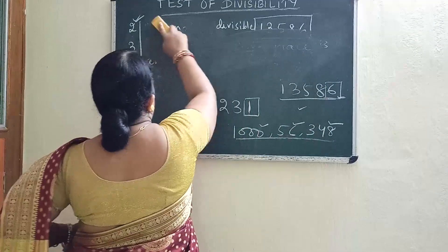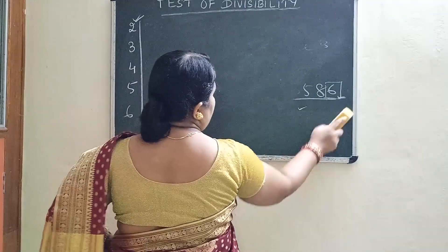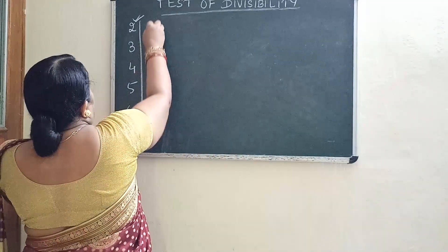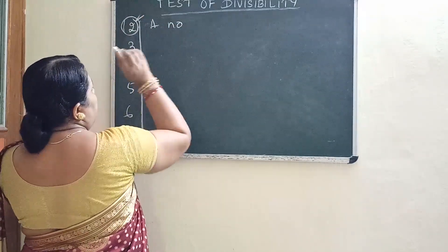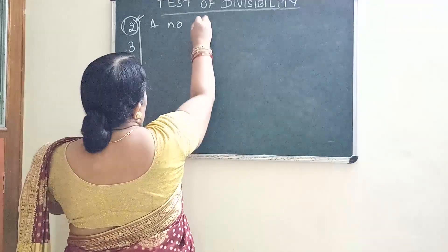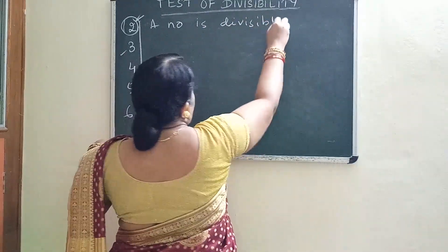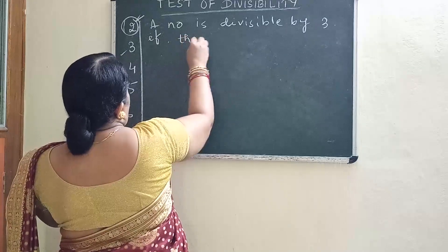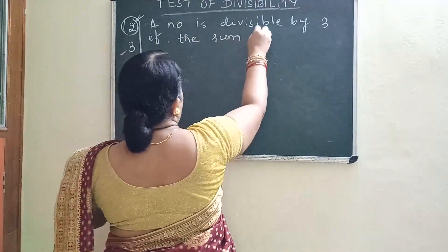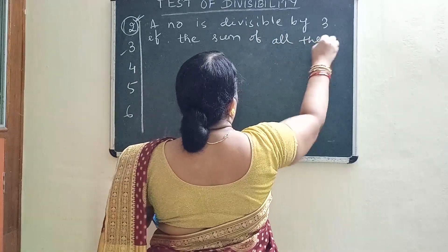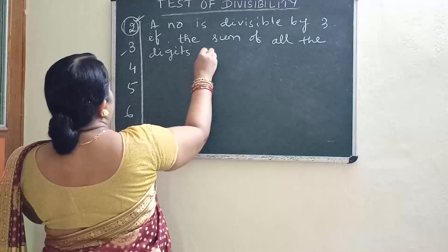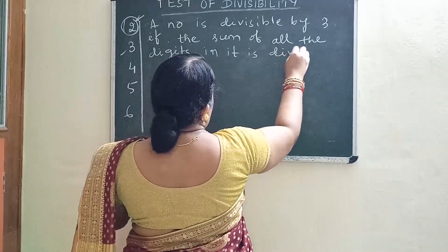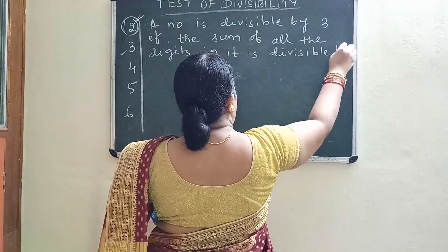Now we will go for the test of three. A number is divisible by three if the sum of all the digits in it is divisible by three.